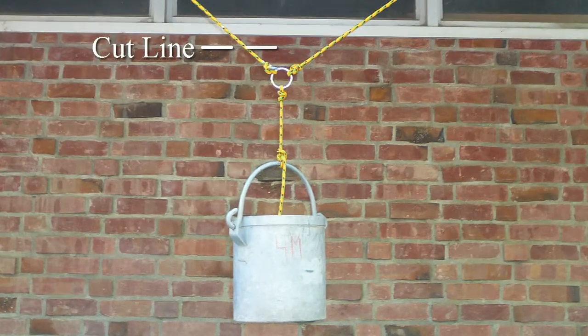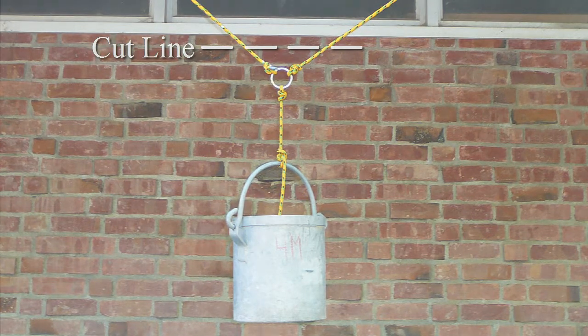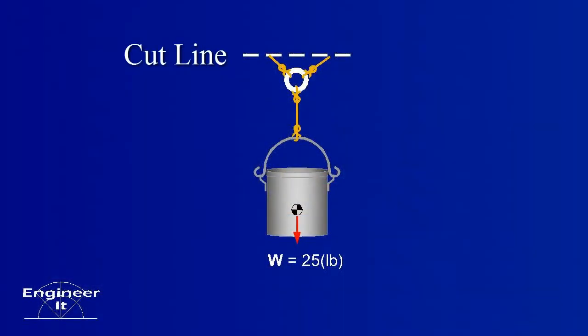Now that the bucket is isolated, let's look at the system again. The rope holding the bucket is attached to the steel ring. Two other ropes attached to the ring pull upward to keep this isolated system in equilibrium.